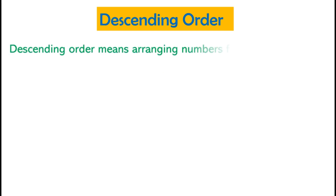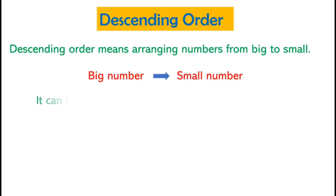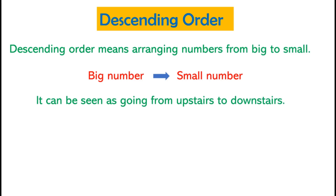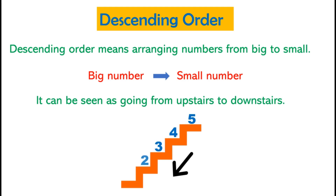Descending order means arranging numbers from big to small. It can be seen as going from upstairs to downstairs. Remember that in descending order, the numbers always keep on decreasing. This is exactly opposite to ascending order — in ascending order we arrange numbers from small to big, while in descending order we arrange numbers from big to small.